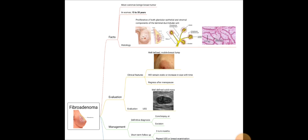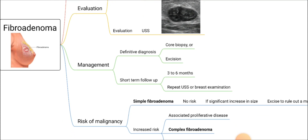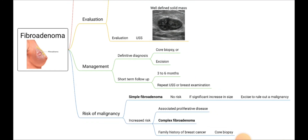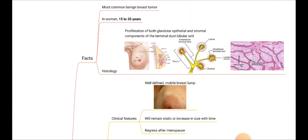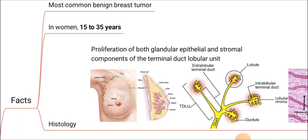Regarding fibroadenoma, we will discuss several facts including the histology, the evaluation of a patient with fibroadenoma, management of fibroadenoma, and the risk of malignancy in fibroadenoma. Fibroadenoma is the most common benign breast tumor. It is prevalent in young females aged between 15 to 35 years, so it is more common in adolescents and younger females.